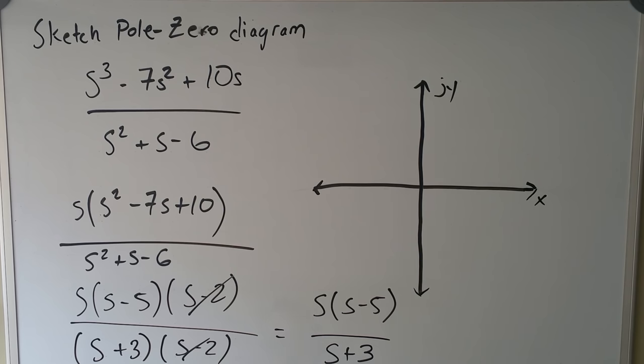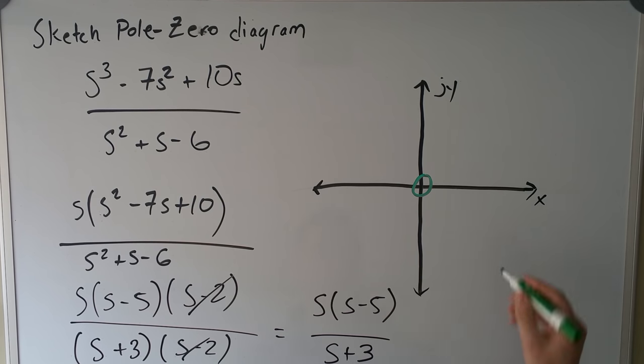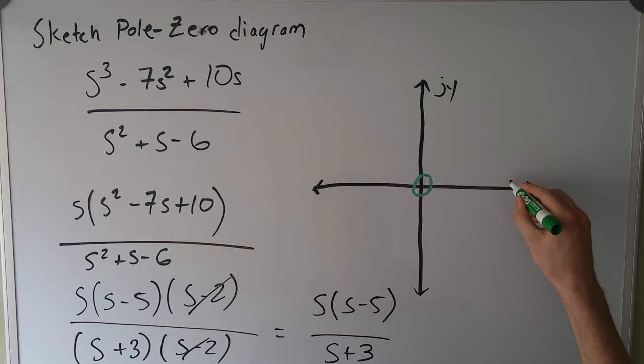We'll start by plotting the zeros, which are on top. The first one we have to plot is s, which is the simplest one. That s is just put on zero zero right away. Then we move on to the s minus 5 zero. Since it's s minus 5, we actually go in the positive direction. There's no j in this case, so we're still on the x-axis. We put a zero right there and mark that as 5.